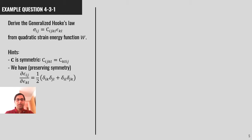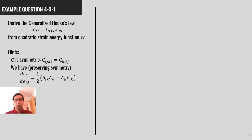Here is an example: derive the generalized Hooke's law sigma_ij = C_ijkl * epsilon_kl from the quadratic strain energy function w. You have two hints. First, C is symmetric, so C_ijkl = C_klij. Second, partial epsilon_ij / partial epsilon_kl equals (1/2)(delta_ik * delta_jl + delta_il * delta_jk). Let's see how we can use these two hints to derive the generalized Hooke's law.